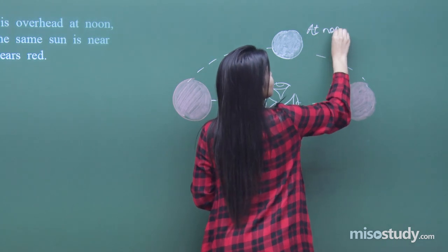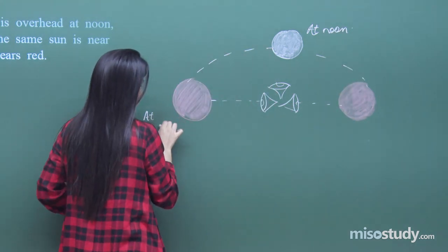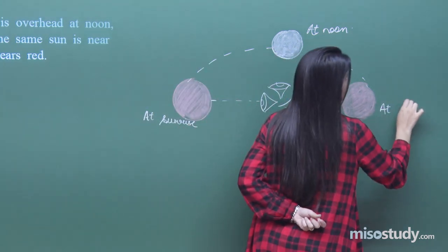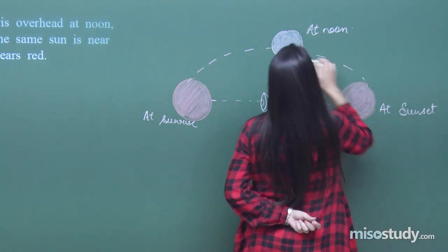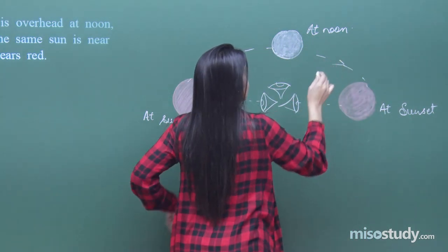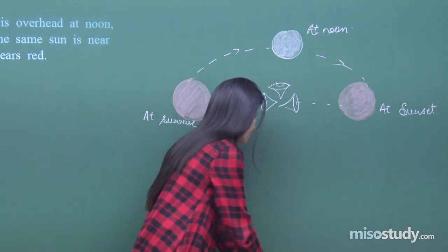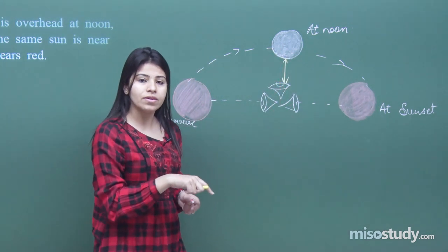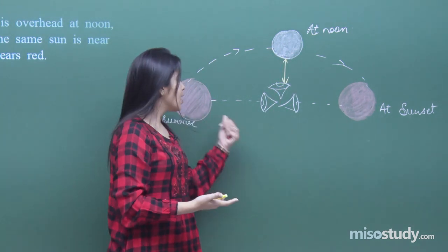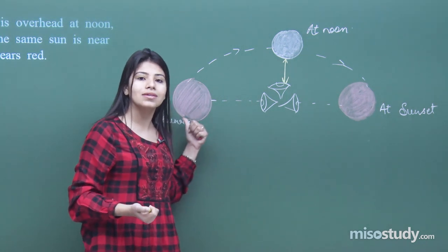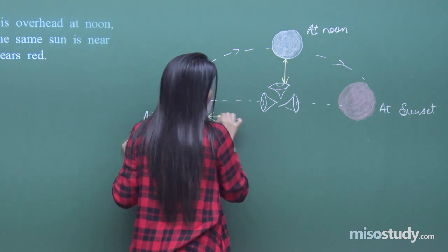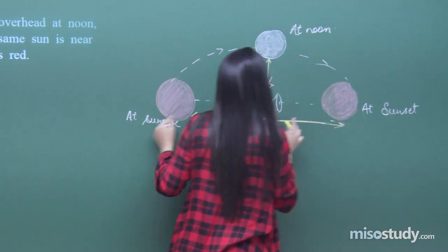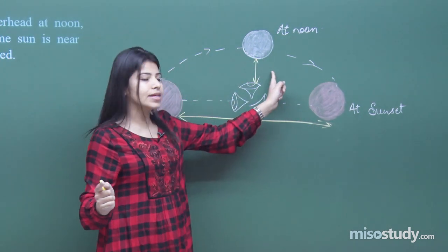At noon the sun is overhead, and at the time of sunset or sunrise the sun is near the horizon. Now compare the distance between the observer and the sun when it is overhead versus when it is near the horizon. That distance is comparatively greater when the sun is near the horizon.